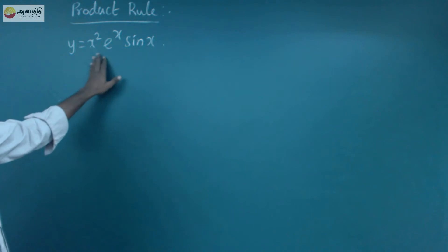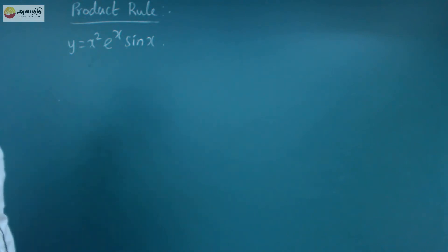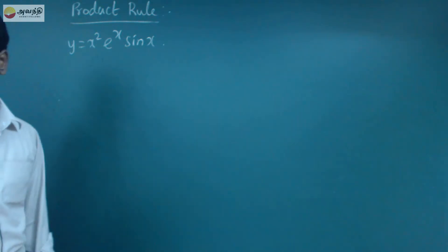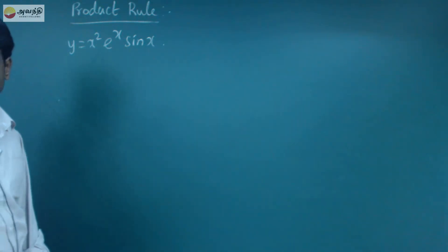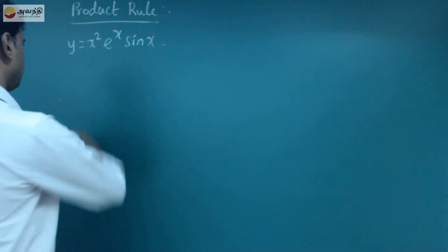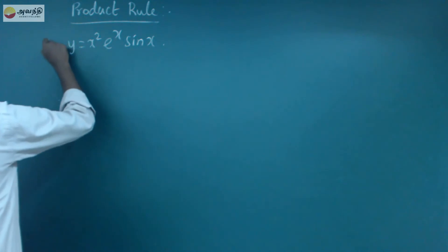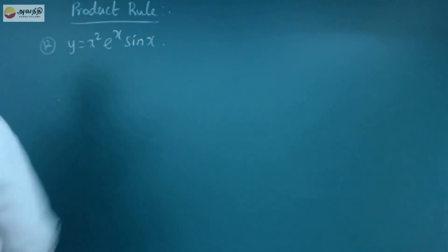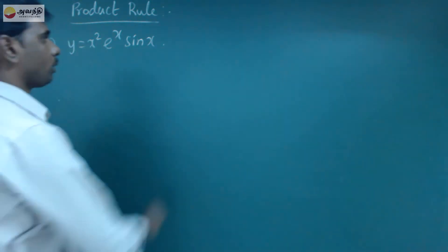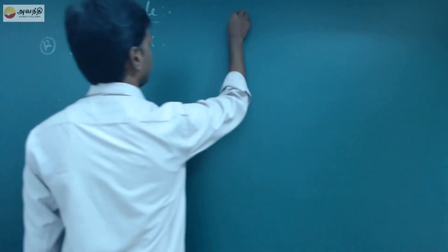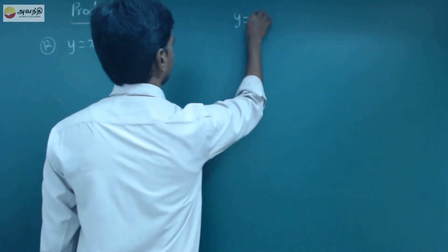y is equal to x squared, e power x, sin x. Exercise 8.5, 12th grade. Here y is equal to uv — a product of functions.